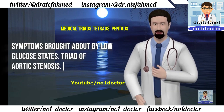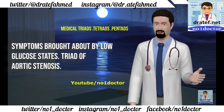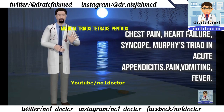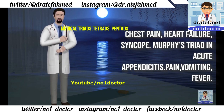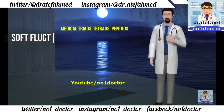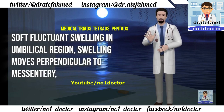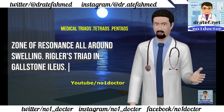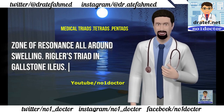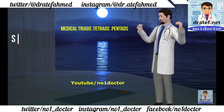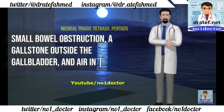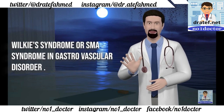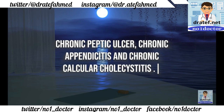Triad of Wernicke's encephalopathy: confusion, ophthalmoplegia, ataxia. Whipple's triad in insulinoma: hypoglycemia during attacks, resolution of symptoms upon correction of blood glucose, symptoms brought about by low glucose states. Triad of aortic stenosis: chest pain, heart failure, syncope. Murphy's triad in acute appendicitis: pain, vomiting, fever. Tio's triad in mesenteric cyst: soft fluctuant swelling in umbilical region, swelling moves perpendicular to mesentery, zone of resonance all around swelling. Rigler's triad in gallstone ileus: small bowel obstruction, a gallstone outside the gallbladder, and air in the bile ducts. Wilkie syndrome or SMA syndrome: gastrovascular disorder, chronic peptic ulcer, chronic appendicitis, and chronic calculous cholecystitis.